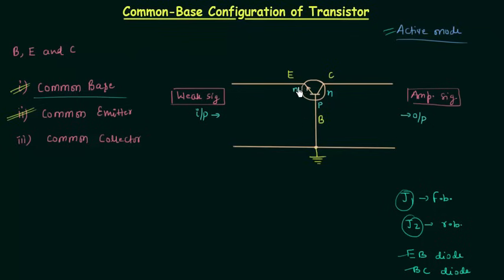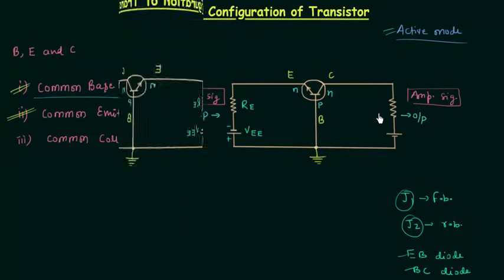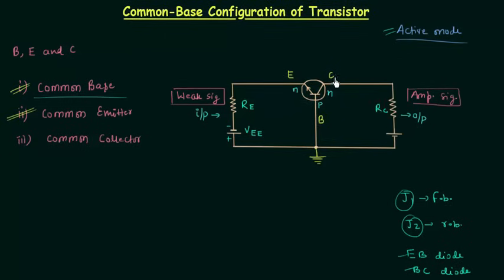To forward bias EB, with resistance RE in the circuit: the emitter is N-type material and the base is P-type material, so the emitter is connected to the positive terminal. This forward biasing potential is called VEE. To reverse bias diode BC, with resistance RC: the collector is N-type material and base is P-type material, so the collector is connected to the positive terminal and base to the negative terminal. This reverse biasing potential is called VCC.